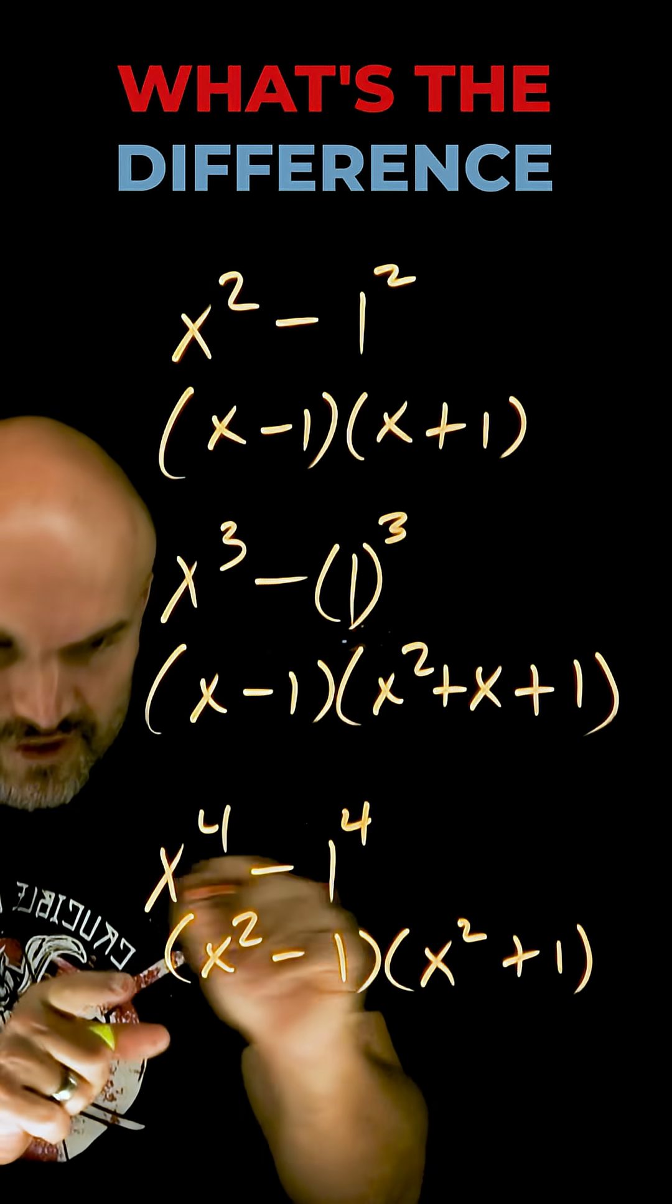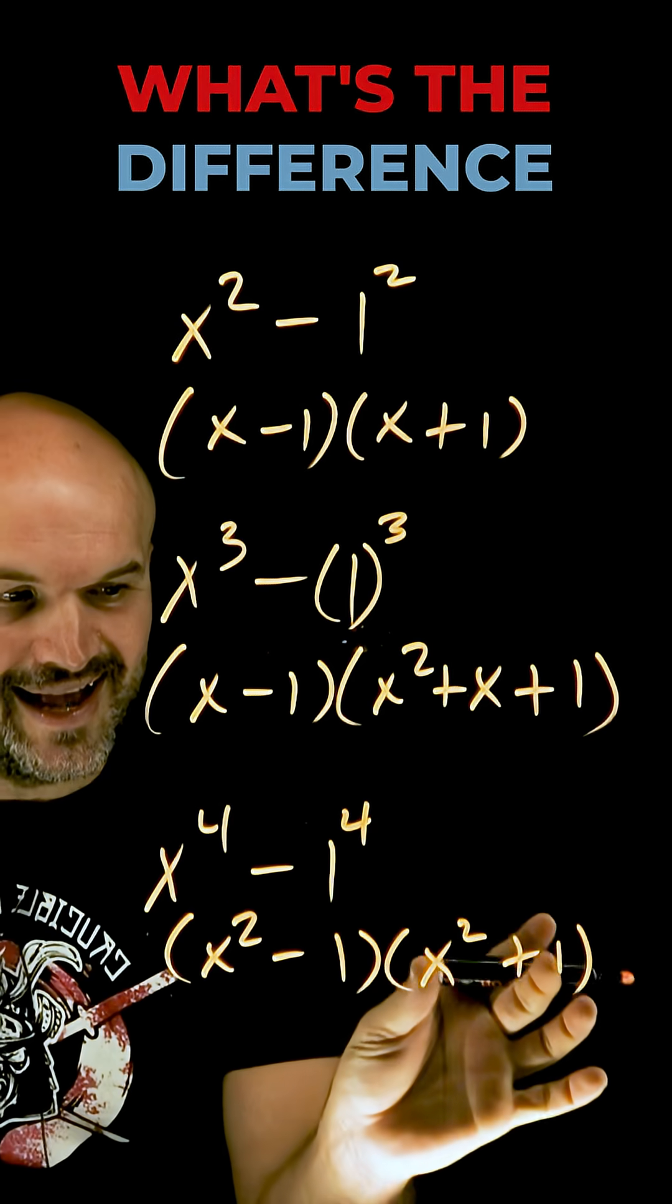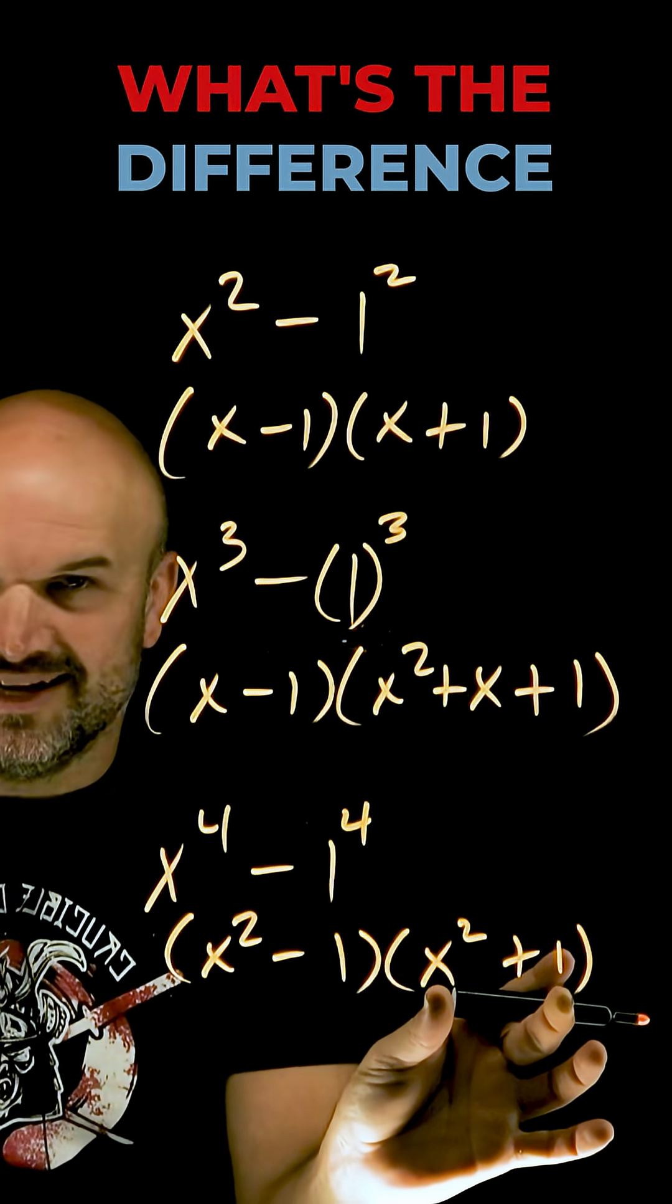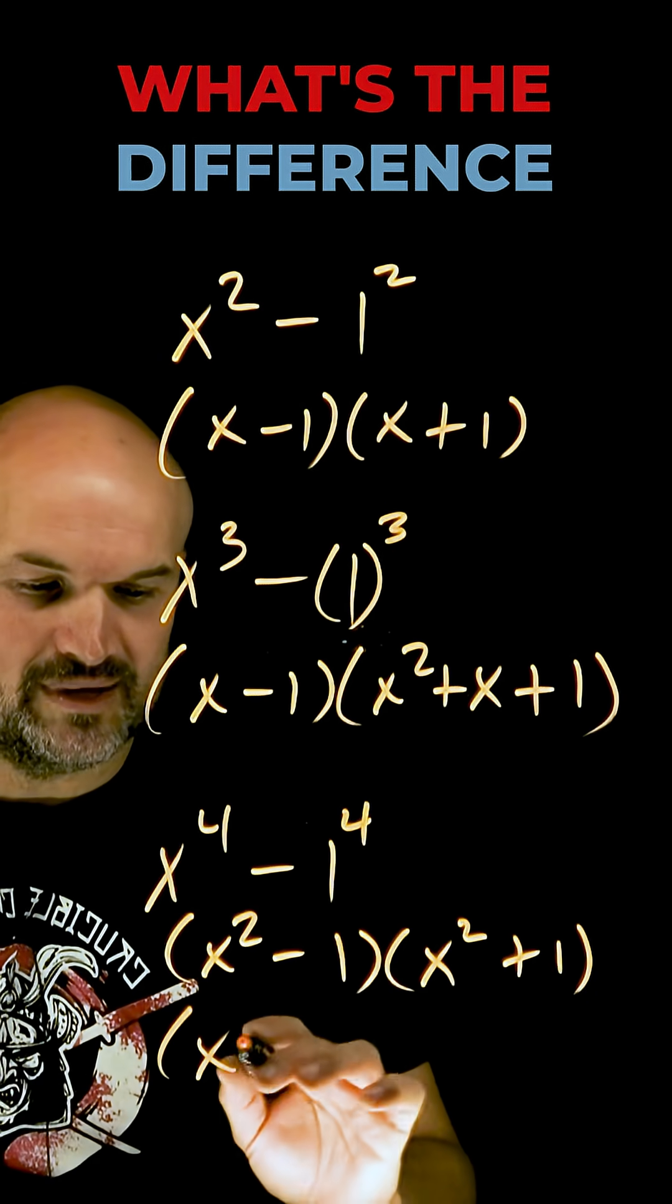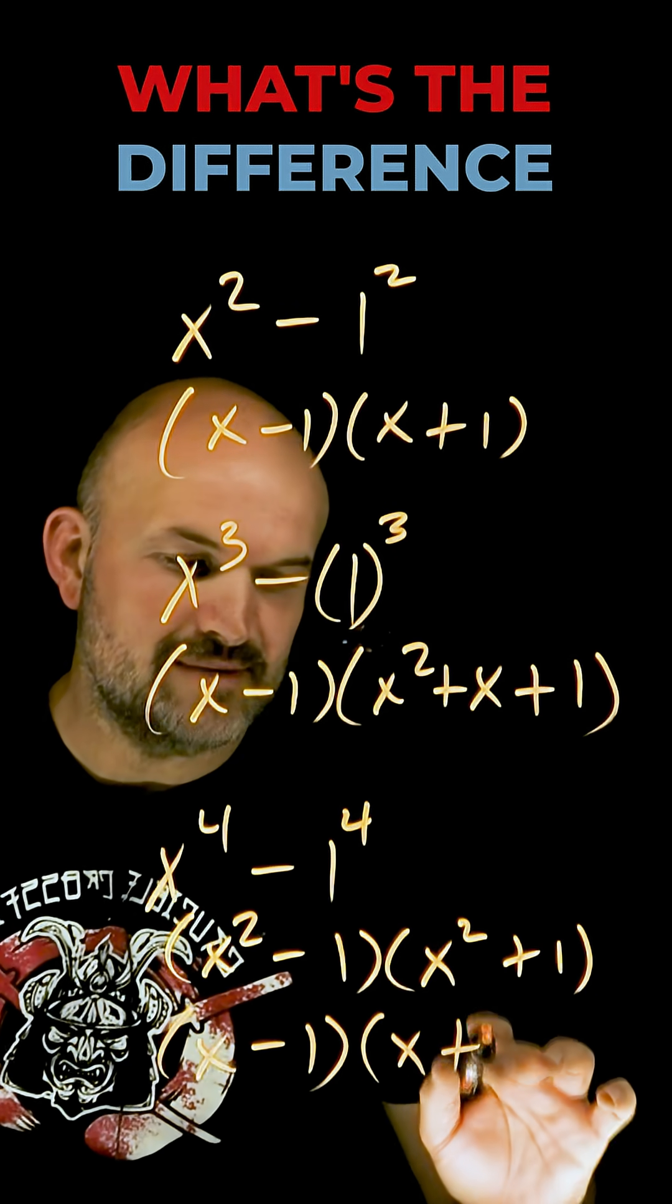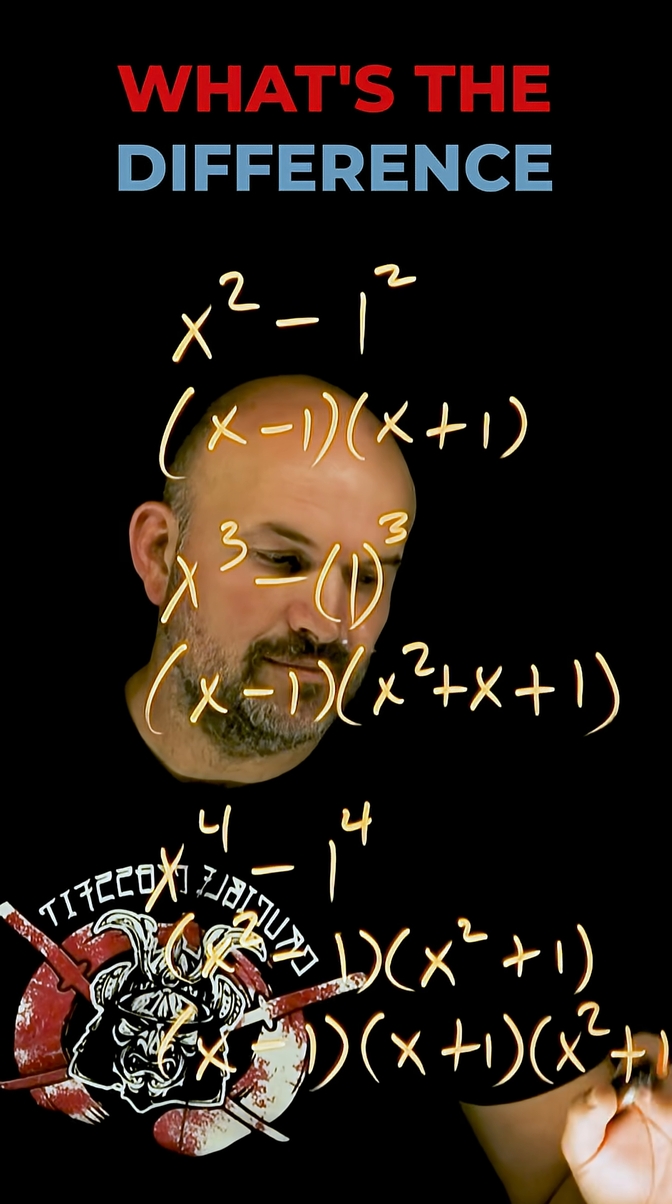We can further break this down as a difference of two squares, and this is the sum of two squares, which we don't have a formula for in our real number system. Therefore, we can factor that into x minus 1 times x plus 1 times x squared plus 1.